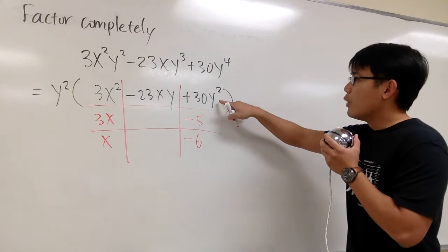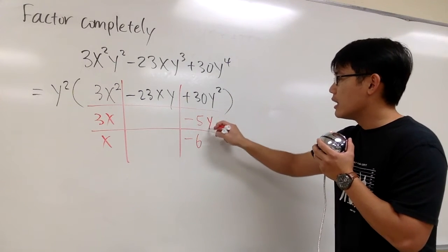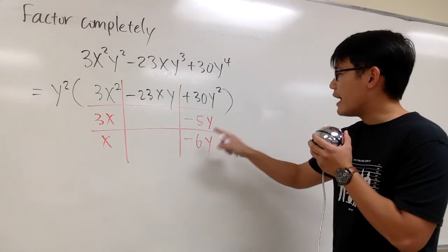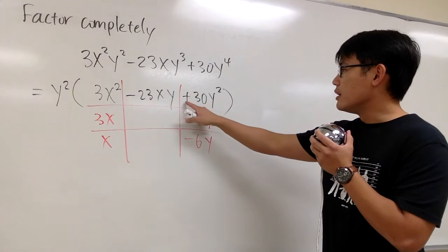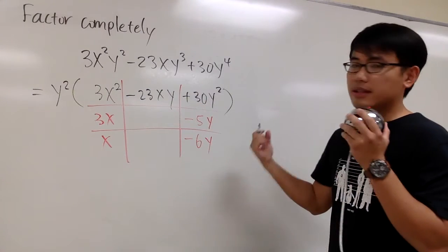But then you see, I want to get y². So that means I would actually have negative 5y and minus 6y. And we see, negative 5y times negative 6y, indeed, that's positive 30y². And let me show you why this is the correct combination.